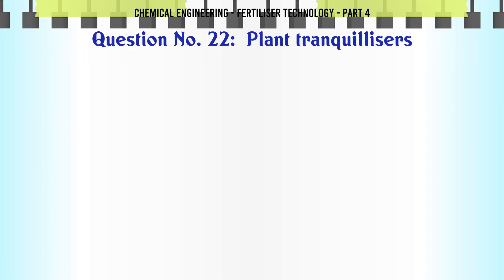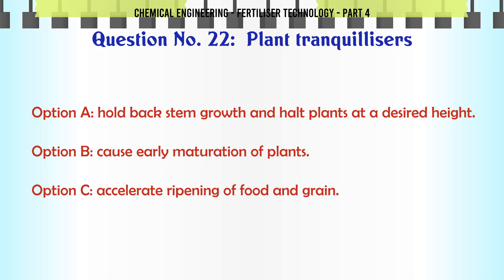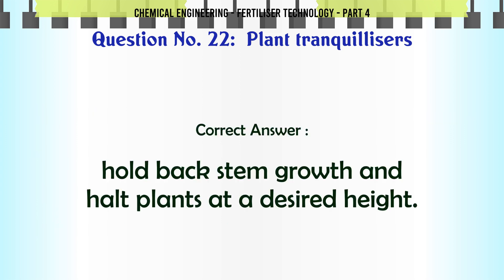Plant tranquilizers: a. hold back stem growth and halt plants at a desired height, b. cause early maturation of plants, c. accelerate ripening of food and grain, d. produce seedless fruit. The correct answer is: hold back stem growth and halt plants at a desired height.